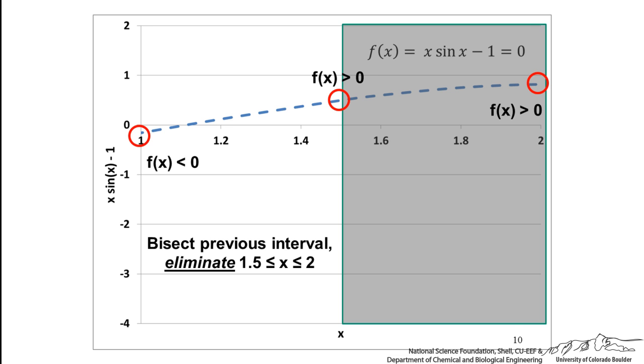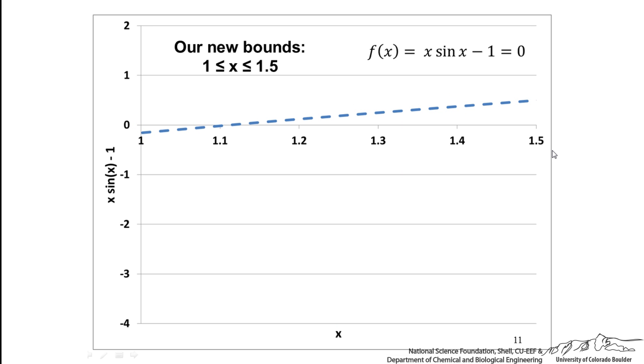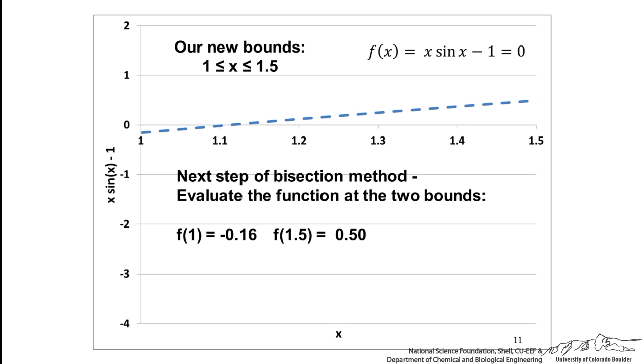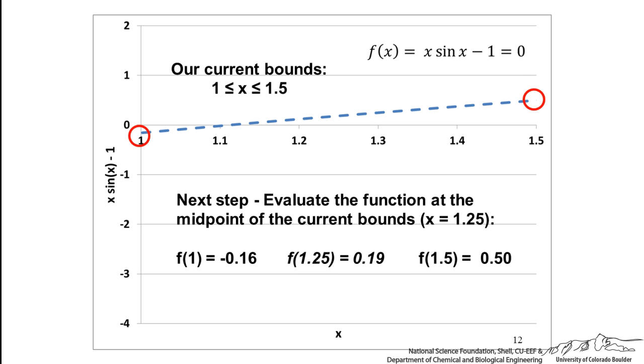Now we are going to zoom in between 1 and 1.5. We have our new bounds, 1, 1.5. We calculate the function at 1, the function at 1.5. We see we have a negative sign on the left, positive sign on the right. That is good. That is what we want. There is a zero because we have a sign change. We then evaluate the function at the midpoint. So f of 1.25 has a positive sign. So where must the zero be? It has got to be between 1 and 1.25. And we can keep going and doing this process.